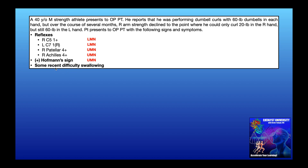The other finding is difficulty swallowing. ALS is one of the conditions with bulbar dysfunction, and swallowing is controlled mainly by cranial nerves 9 and 10 — this indicates bulbar dysfunction. Combined with the mixture of upper and lower motor neuron signs, we're concluding that this is amyotrophic lateral sclerosis.